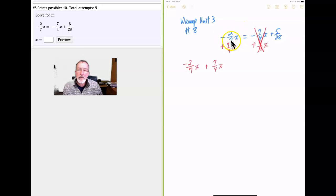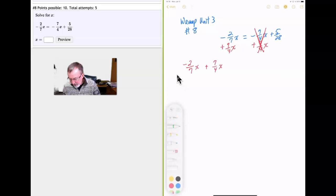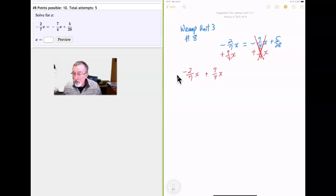And originally we started negative 2/7 x is equal to negative 7/4 x plus 5/28. And I decided to start by adding 7/4 x to both sides. And so we got to this fraction, and we need to add negative 2/7 x and 7/4 x, and we were going to pick a common denominator. And 4 and 7, so one way to do that is to do a prime factorization. The easy way is to just say 4 times 7. What's that? 28. So 28 would definitely work.